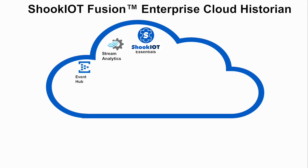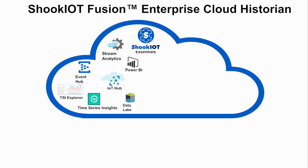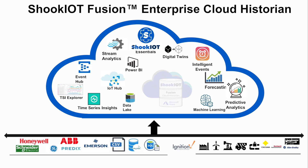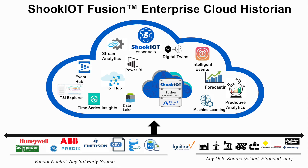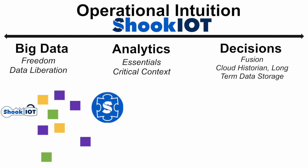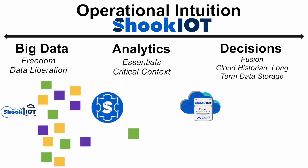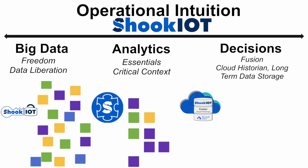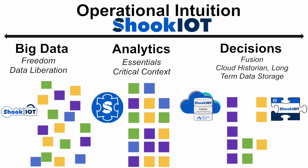Achieve operational intuition with big data analytics and agile decision-making by unlocking and liberating your data. Get data from any data source, whether it be siloed, stranded, or any third-party system, and provide critical context with Shook IoT Essentials — clean, organize, and make it easy to share — then store it in the Cloud Historian for long-term storage, enabling data scientists and engineers to perform big data analytics for faster, better decision-making.